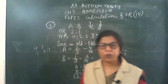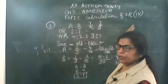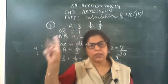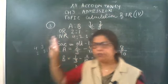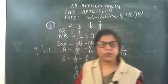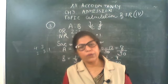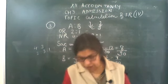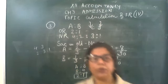From tomorrow onwards, we will cover the calculation of ratios — four parts are over: simple case, sacrifice ratio with both old and new given. From tomorrow onwards I will explain how to calculate goodwill — methods of calculation of goodwill. If you have any doubt, you can ask.